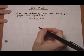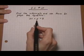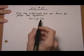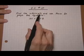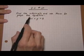3.2 number 10. Here we have a linear equation in two variables and we want to first find the intercepts and then use them to graph the equation.